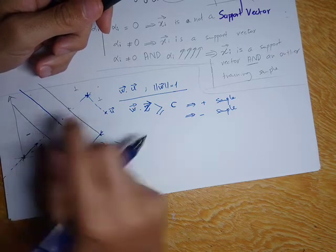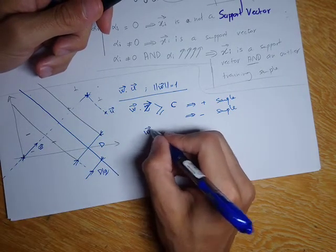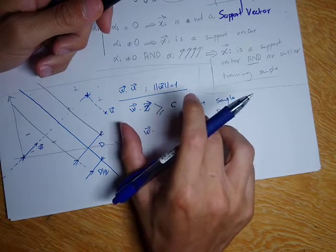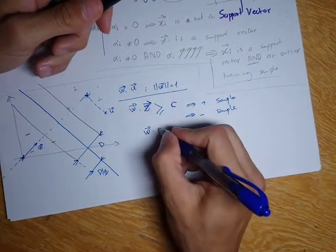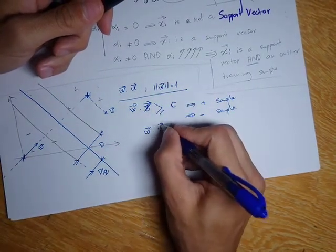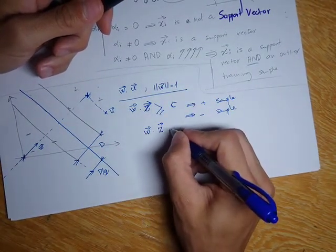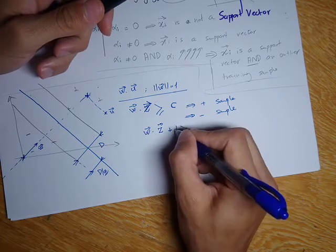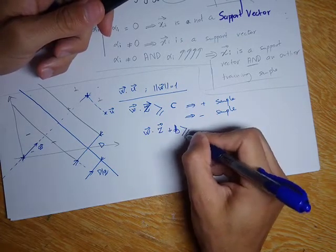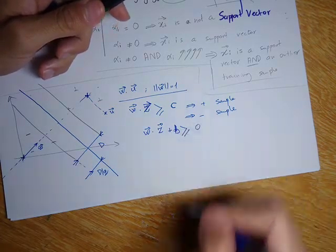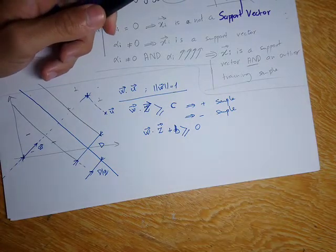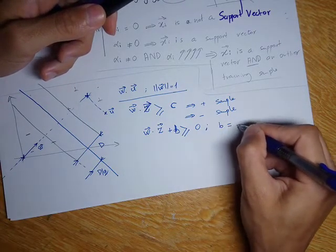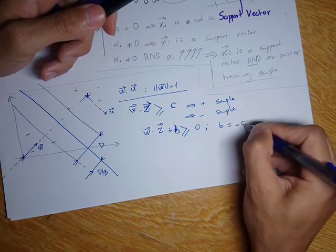I then modified the decision rule to obtain w dotted with z plus b ≥ 0, where b equals minus c.